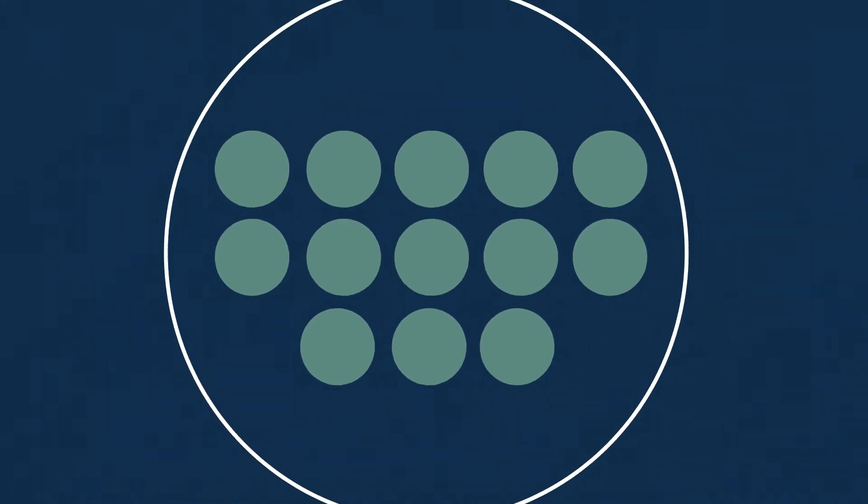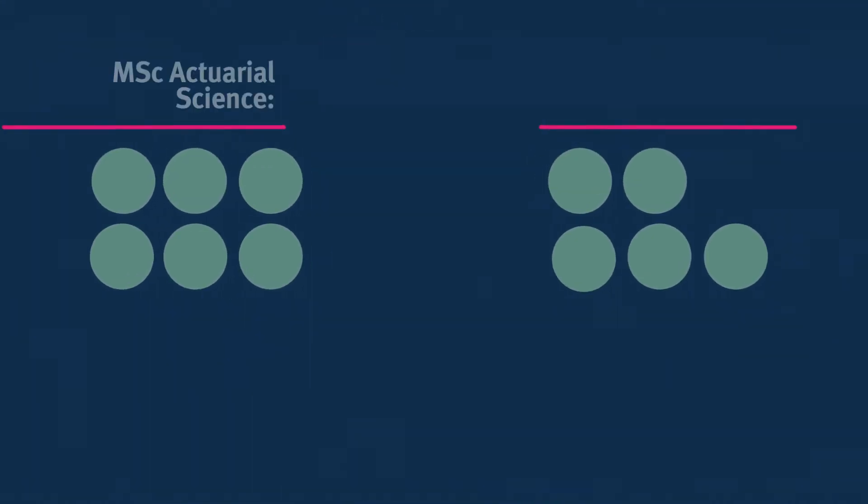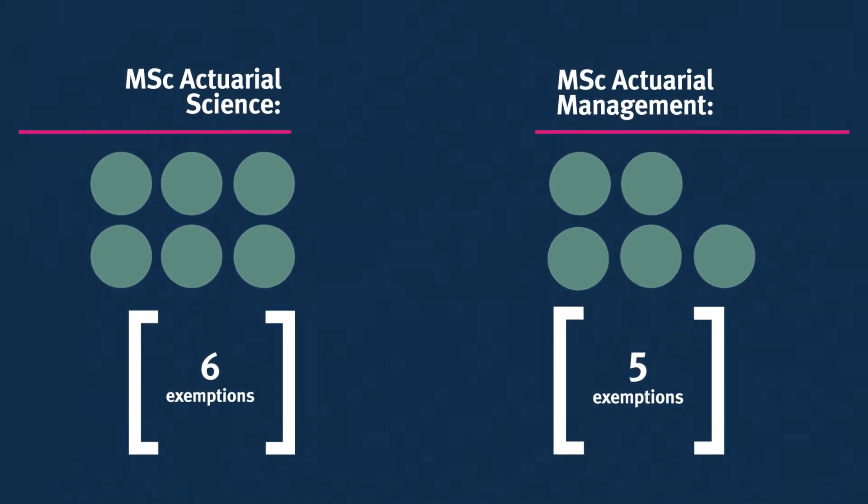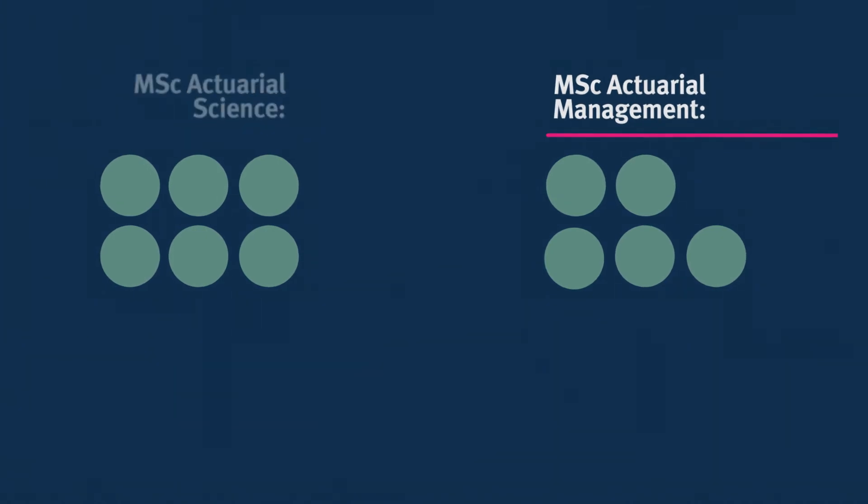To qualify as an actuary, you need to pass 13 professional examinations. Together, our degrees offer 11 exemptions from these examinations, the maximum that any institution can offer.